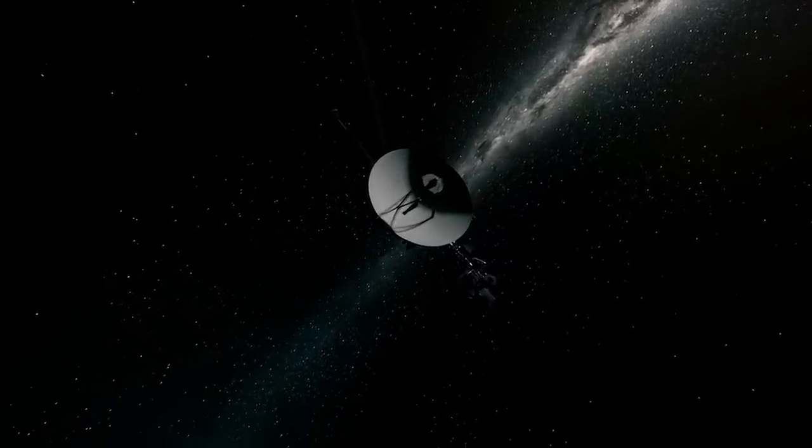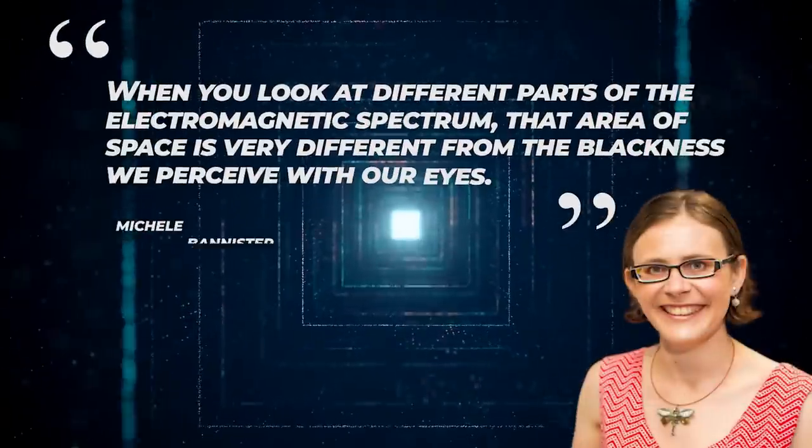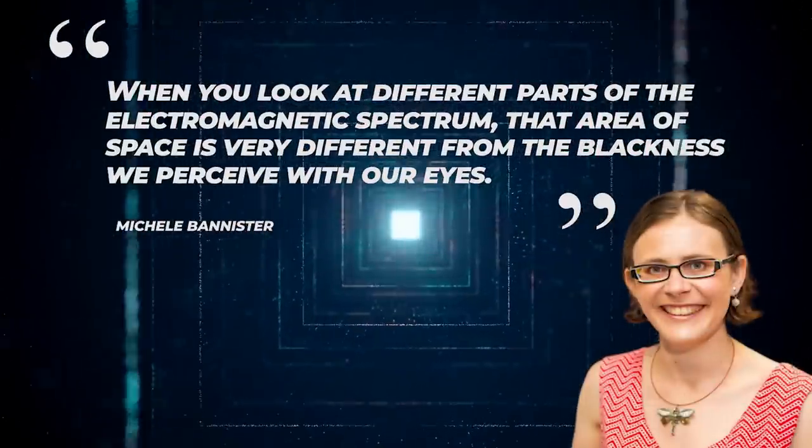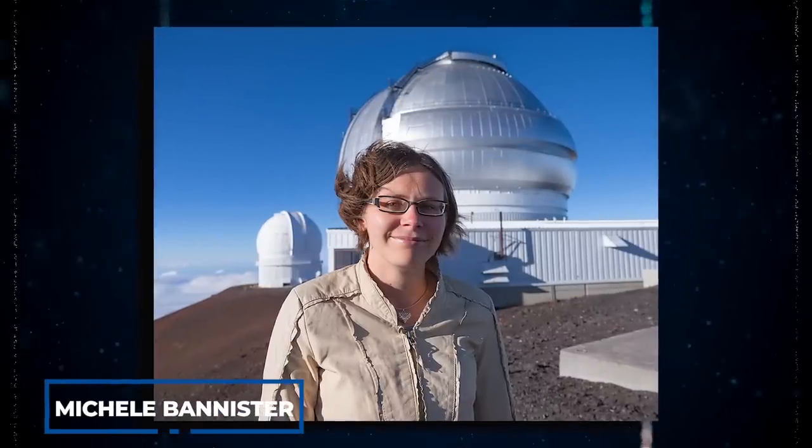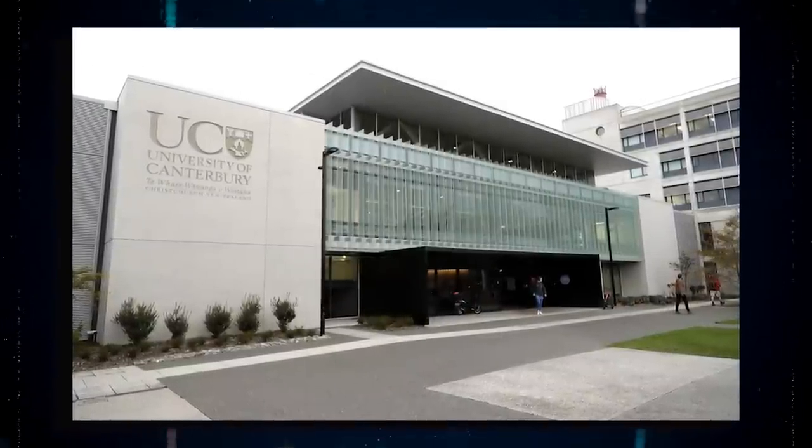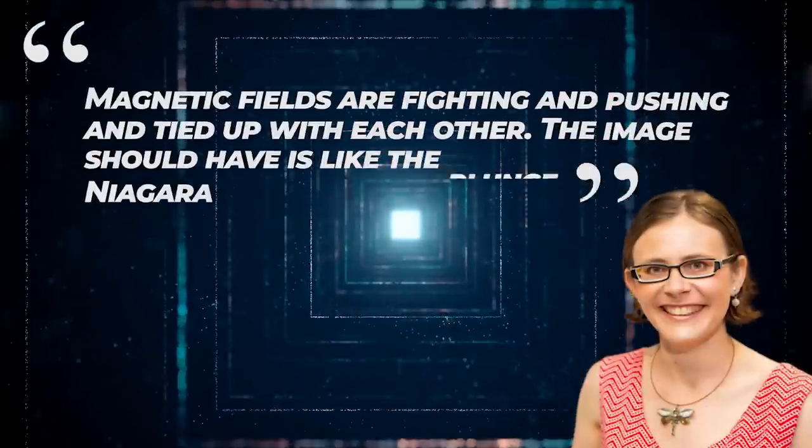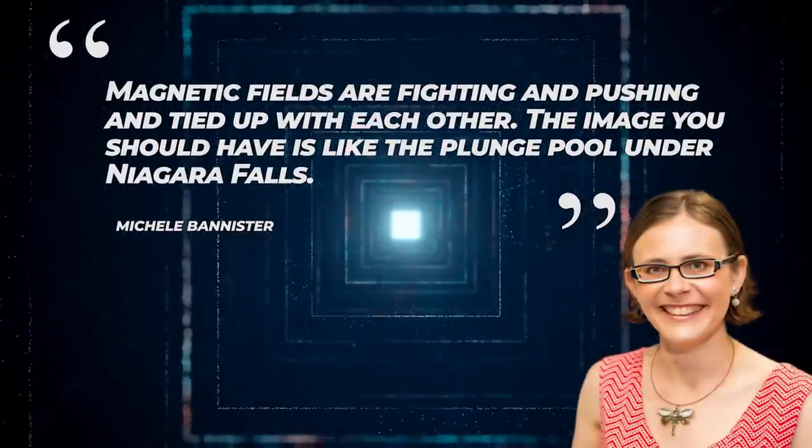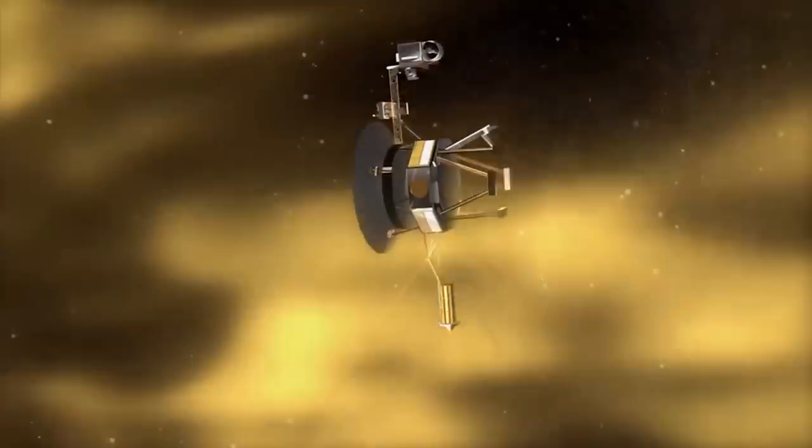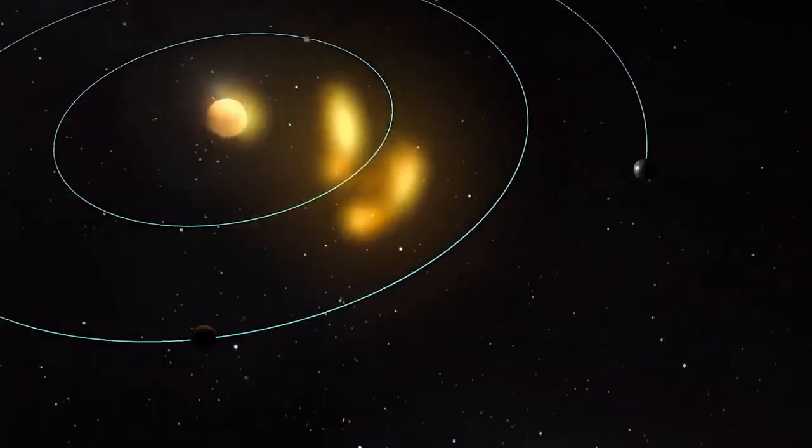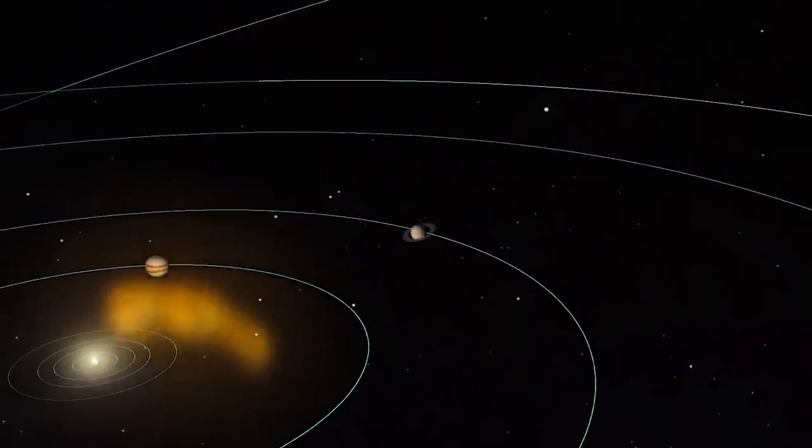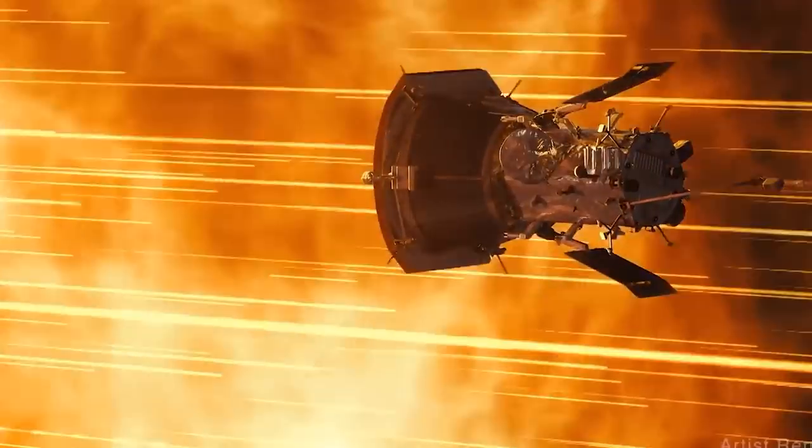However, for the past few years, these two spacecrafts have been beaming back our first glimpses of this strange region known as interstellar space. As the first man-made objects to leave our solar system, they are venturing into uncharted territory billions of miles from home. They have revealed that beyond the boundaries of our solar system lies an invisible region of chaotic, frothing activity. When you look at different parts of the electromagnetic spectrum, that area of space is very different from the blackness we perceive with our eyes, says Michelle Bannister, an astronomer at the University of Canterbury. Magnetic fields are fighting and pushing and tied up with each other. The image you should have is like the plunge pool under Niagara Falls. Instead of tumbling water, however, the commotion is caused by the solar wind, an unceasing and potent flow of charged particles called plasma that shoots out in all directions from the sun. This wind clashes with a mixture of gas, dust, and cosmic rays that drifts among the star systems known as the interstellar medium.